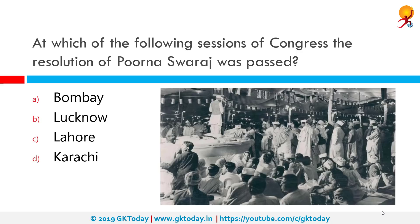At which of the following sessions of Congress was the resolution of Purna Swaraj passed? This is a very important one. It was passed in the Lahore session of December 1929, and it was the same session in which Jawaharlal Nehru was elected as the President of Congress.